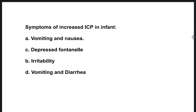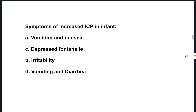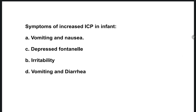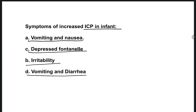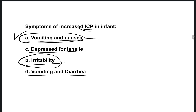The next question: symptoms of increased intracranial pressure in infants. Options are: vomiting and nausea, depressed fontanel, irritability, vomiting and diarrhea. The right option is option A — vomiting and nausea is present in the case of increased ICP, both in infants and in adults. But don't confuse with irritability.